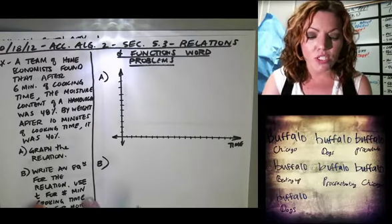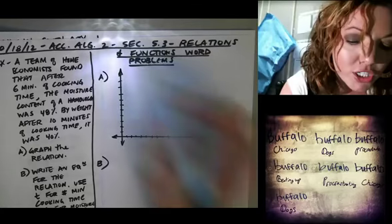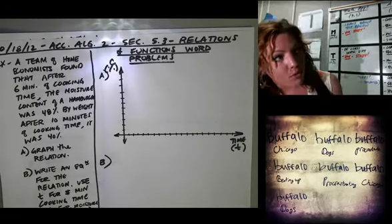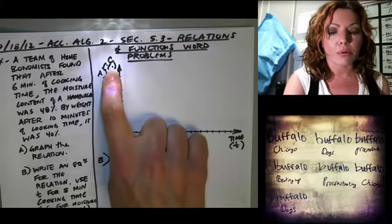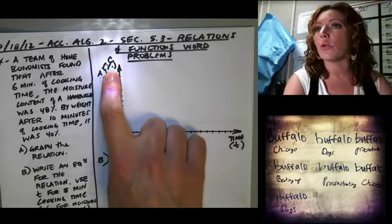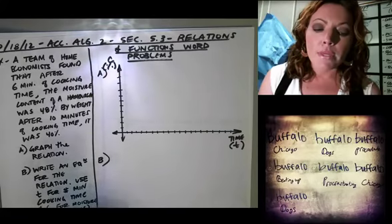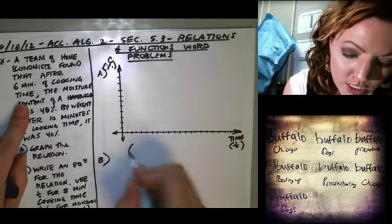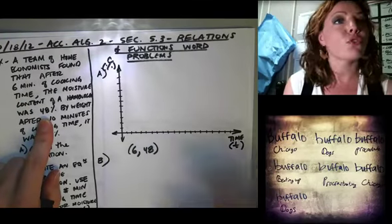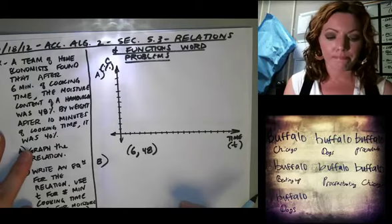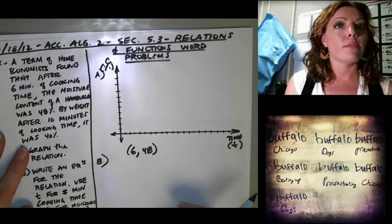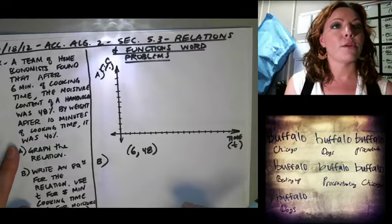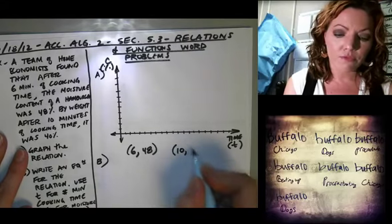The problem says to use t for the number of minutes of cooking time and c for the moisture content in percent. So this axis is t and this axis is c with a percent sign. Now we're going to make some coordinates. After six minutes of cooking time, the moisture content was 48, so our first coordinate is (6, 48). The second coordinate is (10, 40).